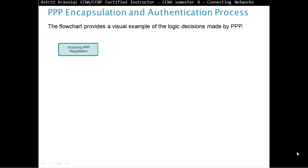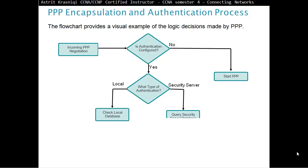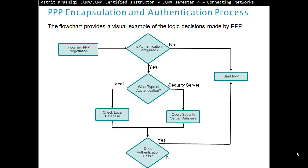The flowchart provides a visual example of the logic decisions made by PPP. When we have an incoming Point-to-Point Protocol negotiation, we check first: is authentication configured? If not, we start PPP. If it is, we check what type of authentication — local, where we check our local database, or security server, where we check a security server such as a RADIUS server. If authentication passes, we start PPP; if it doesn't, we disconnect.